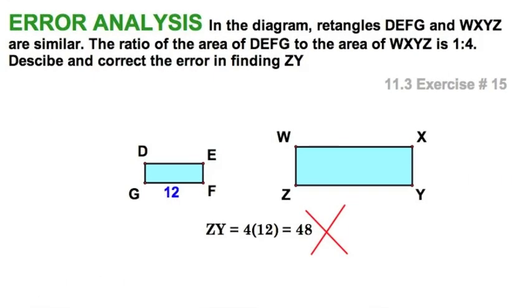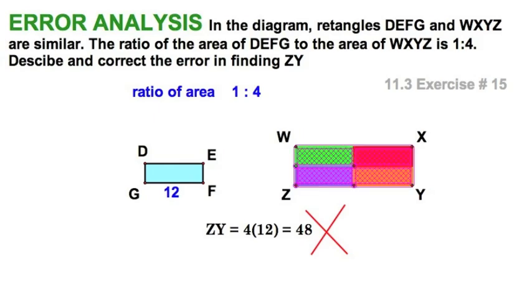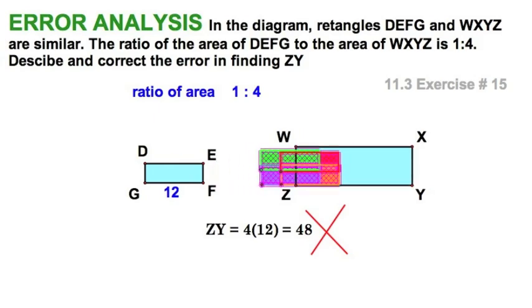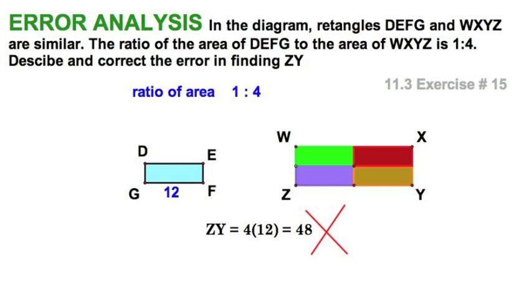Well, here we go with exercise 15, which is one of those wonderful error analysis problems. We're given that the ratio of areas is 1 to 4. Let's visualize it. That means it looks like this: this one rectangle would fill in, it would take four of them to fill in this area there to the right. So let's do that again. Yeah, I can see that. Okay, we got that point.